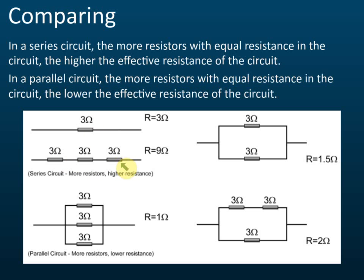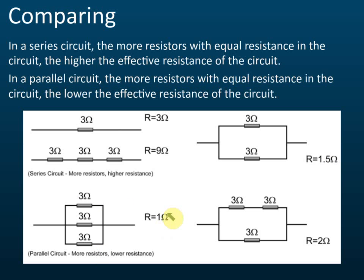Now let's look at the same 3-ohm resistors connected in parallel. If we connect two 3-ohm resistors in parallel, the effective resistance is 3 divided by 2, which is 1.5 ohms — that's the resistance of one resistor divided by the number of resistors. With three resistors in parallel, it becomes 3 divided by 3, which is 1 ohm. So: one resistor is 3 ohms, two give 1.5 ohms, three give 1 ohm — the more resistors in parallel, the lower the resistance.